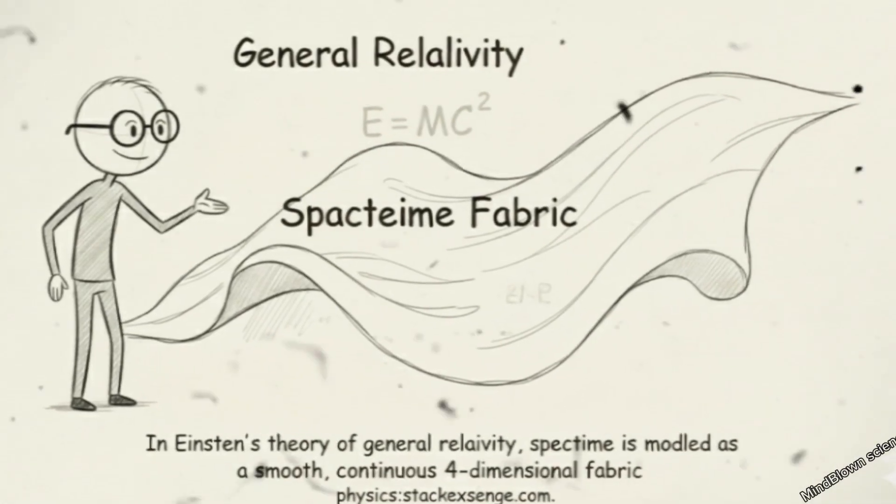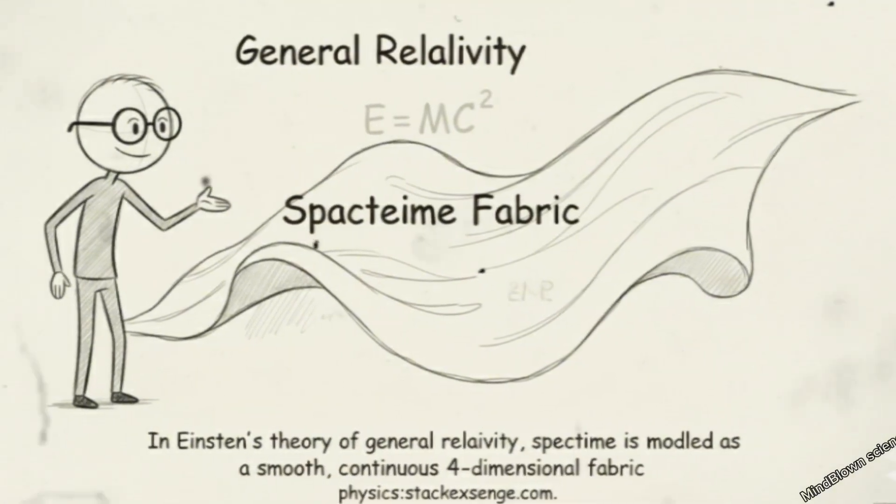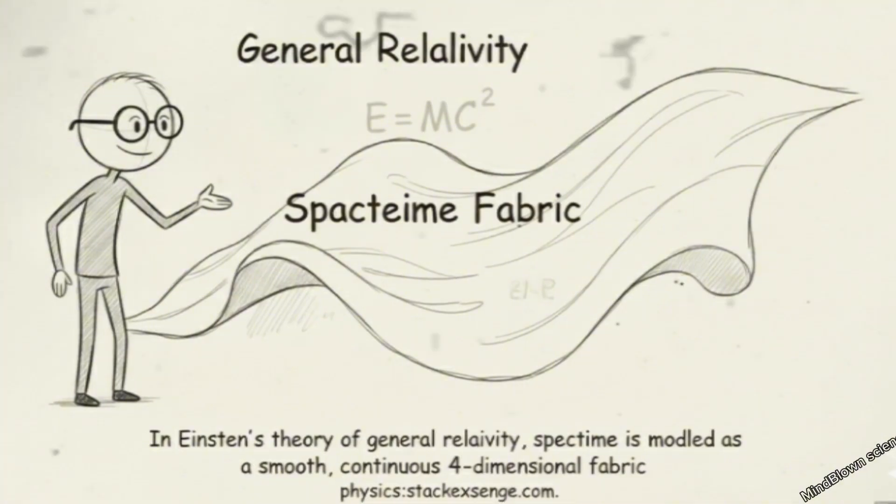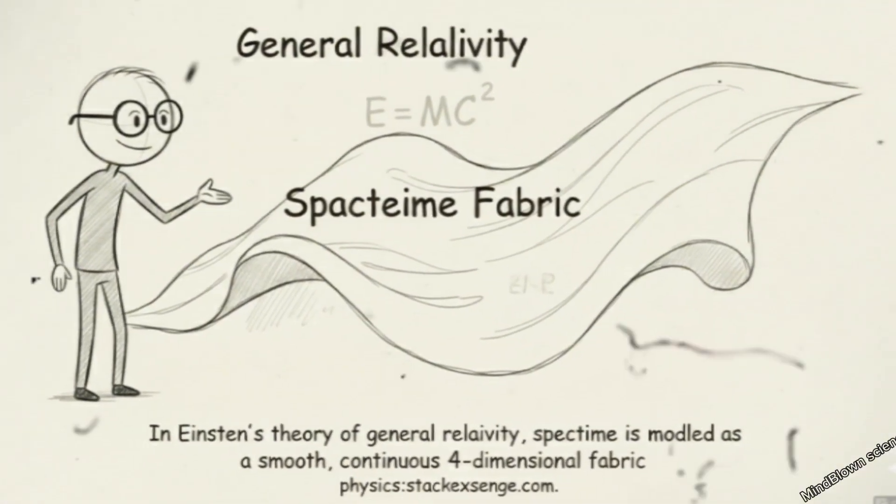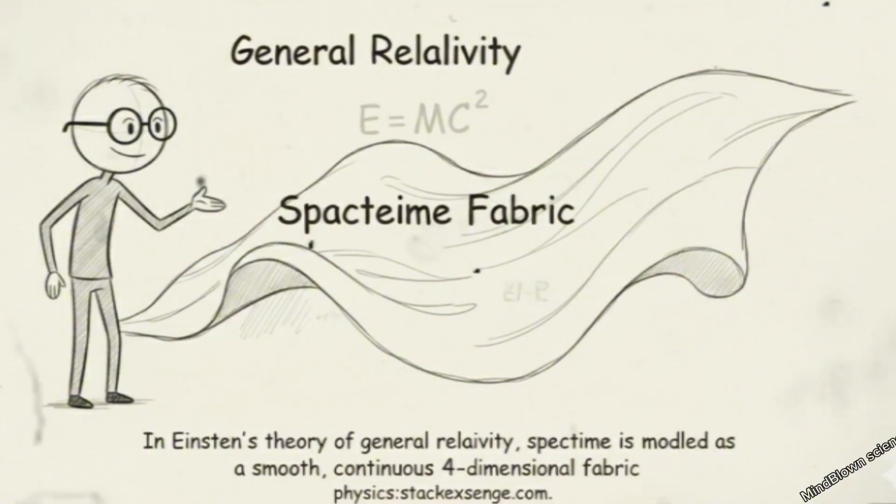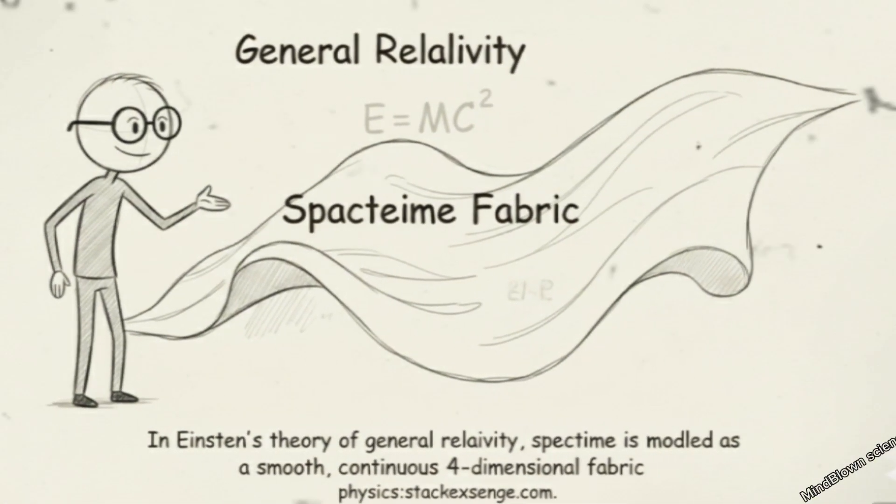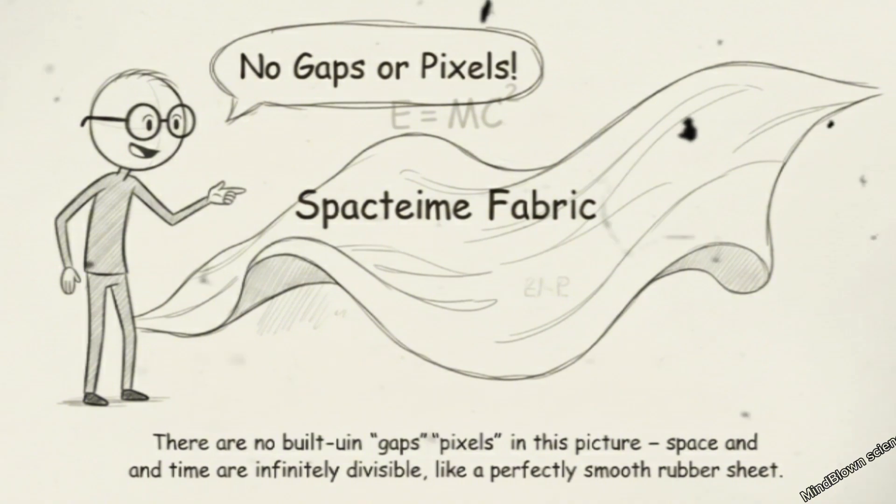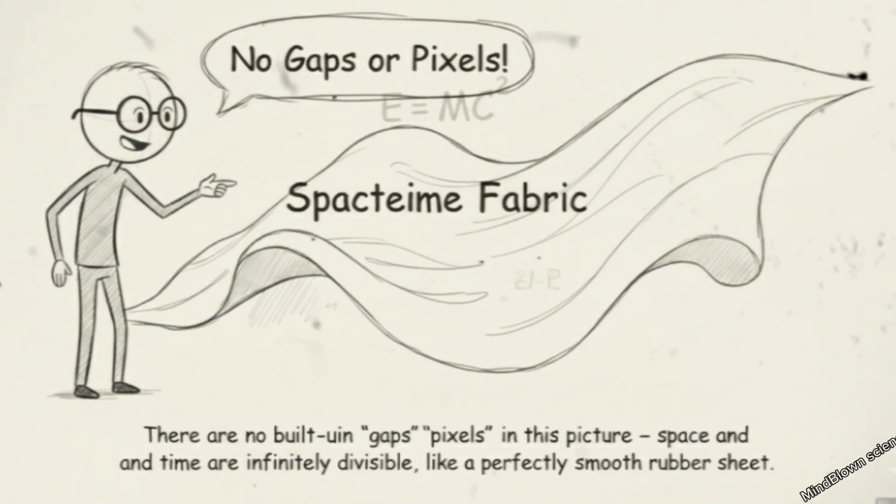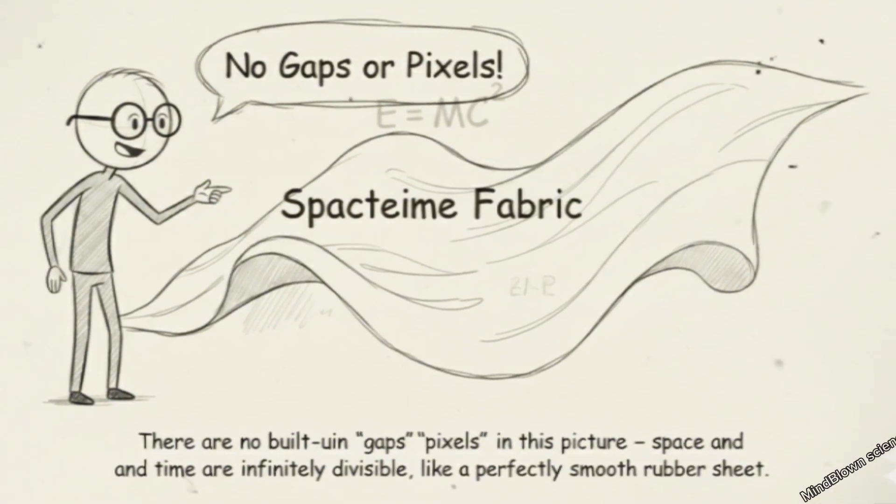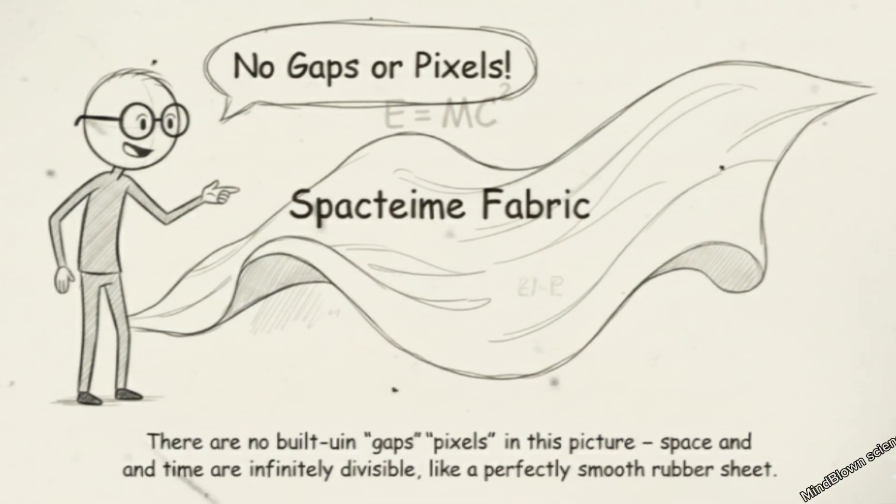Continuous spacetime: the smooth fabric. General relativity's view. In Einstein's theory of general relativity, spacetime is modeled as a smooth, continuous, four-dimensional fabric. There are no built-in gaps or pixels in this picture. Space and time are infinitely divisible, like a perfectly smooth rubber sheet.